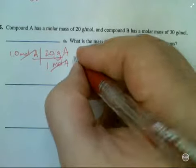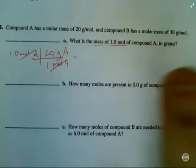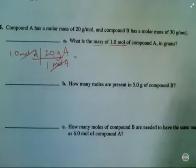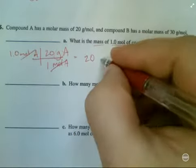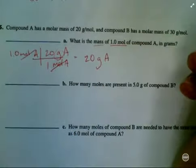So moles cancel. I'm going to have grams left over for my answer. Multiply that out. Guys, I don't even need my calculator for this one because I am that sharp. It's going to be 20 grams of A.